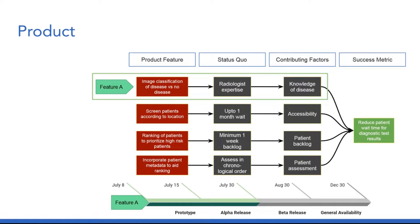For our product strategy, the ultimate success metric is to reduce patient wait time for diagnostic test results. One factor that contributes to lengthy wait time is knowledge of disease, which is dependent on radiologists' expertise. Therefore, feature A classifies disease. A secondary factor is accessibility — for those living in remote locations or in developing countries, it can be a one-month wait, so our product feature should screen for patient locations. Moreover, patient backlog is another factor. Hospitals usually report a minimum one-week backlog. Therefore, our product feature should reorder this backlog to prioritize high-risk patients.